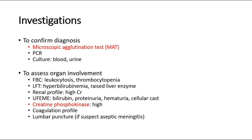To confirm the diagnosis, we perform the microscopic agglutination test. Other investigations include PCR and culture of blood and urine. To assess for organ involvement, do a full blood count to look for leukocytosis and thrombocytopenia, liver function tests expecting hyperbilirubinemia and raised liver enzymes, renal profile expecting high creatinine levels, and creatine phosphokinase, which is expected to be elevated in Leptospirosis.